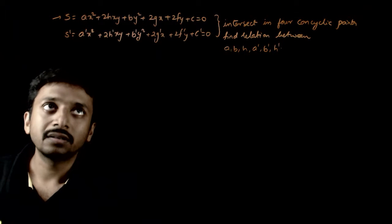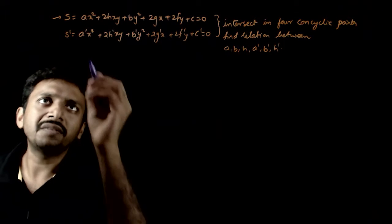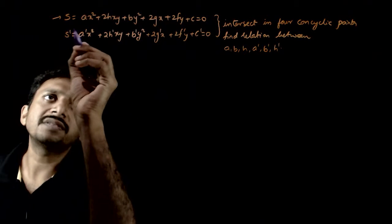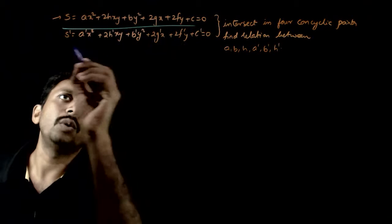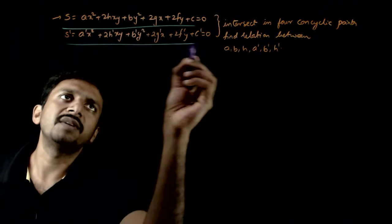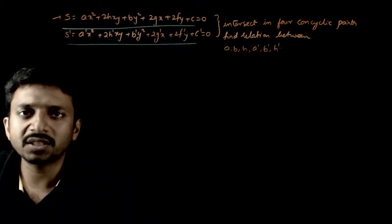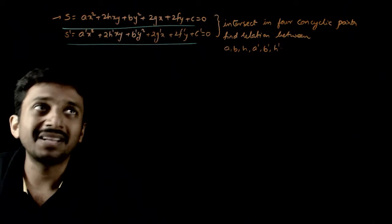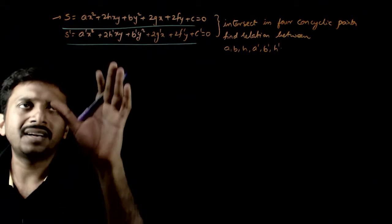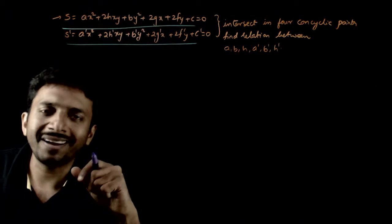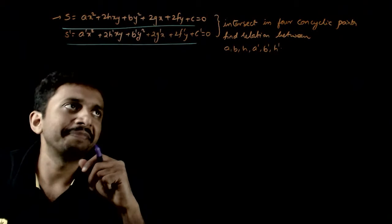Welcome students. This question may have given two curves: Ax² + 2Hxy + By² + 2Gx + 2Fy + C = 0, and an equation involving A dash and B dash.